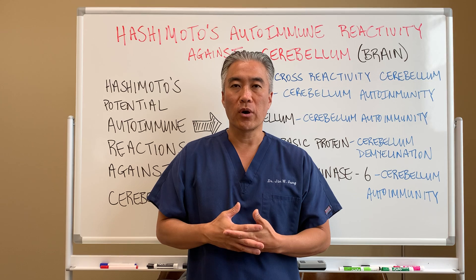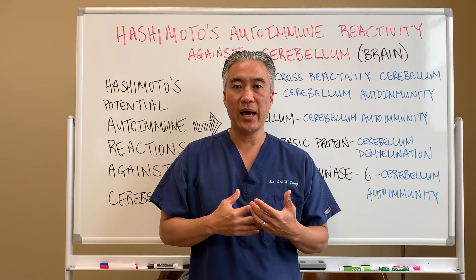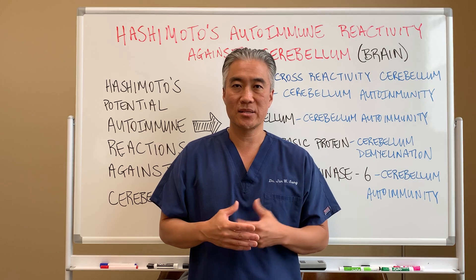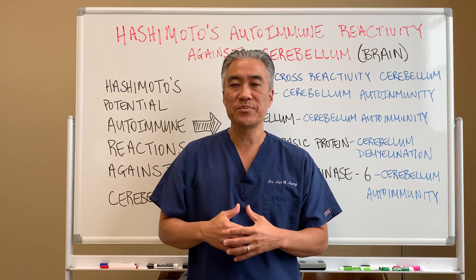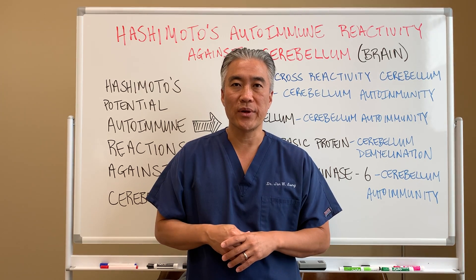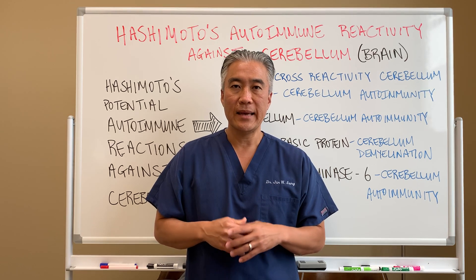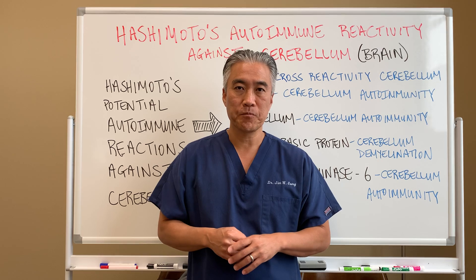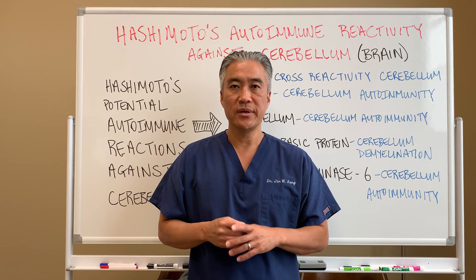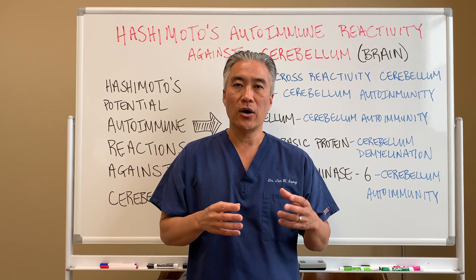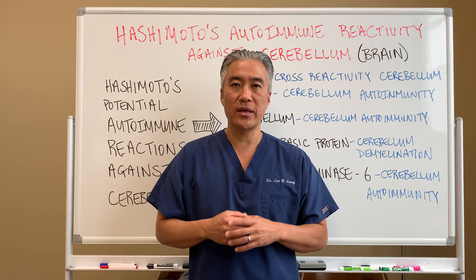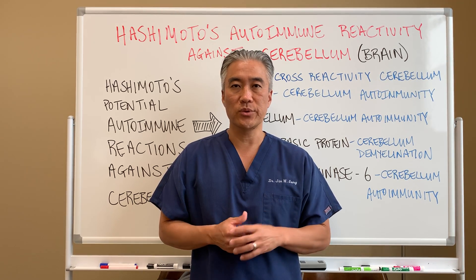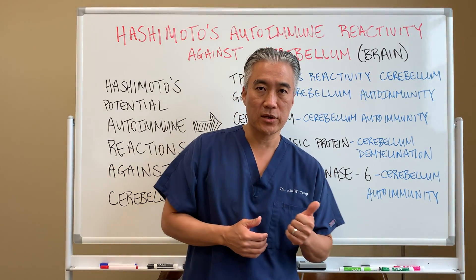What do we need to look for when we have patients who have problems with the cerebellum, or basically the balance centers of our brain? When a patient comes in and they're diagnosed with Hashimoto's thyroiditis and they have issues with what we call ataxia, or gait disturbances, we need to look at other antibodies — other than TPO antibody for thyroid — to see if they actually have issues with the cerebellum. So let's take a look.